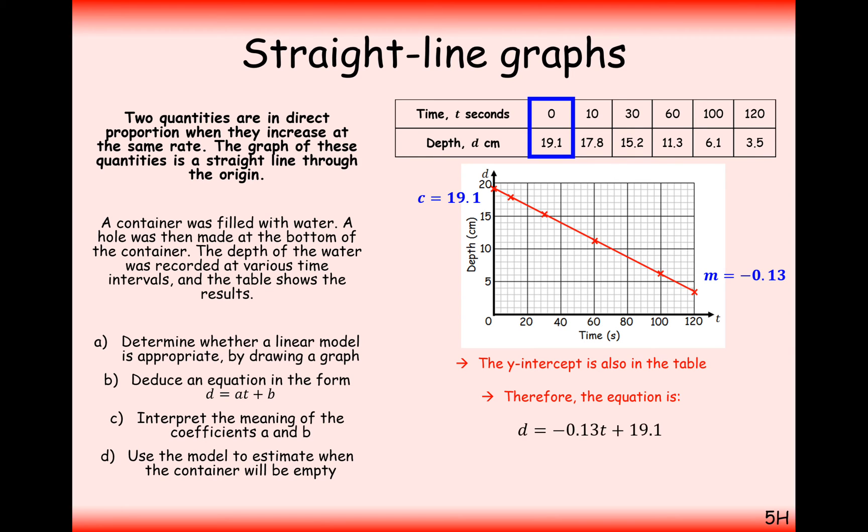Now just plugging these into the equation of d equals at plus b, we get d equals minus 0.13t plus 19.1. So, that's the equation of this line. Interpret the values of a and b.